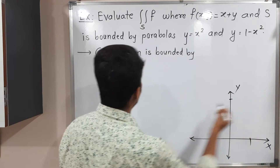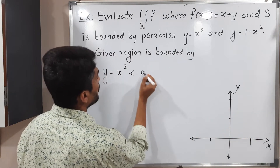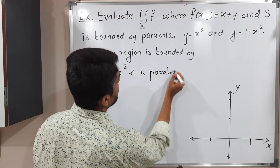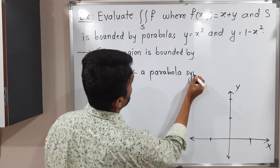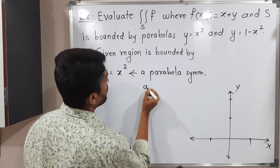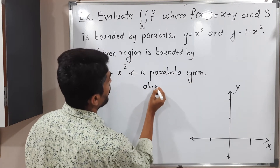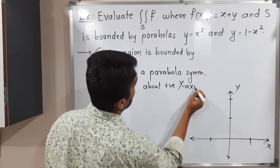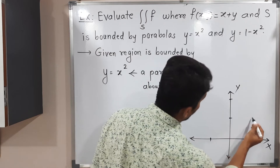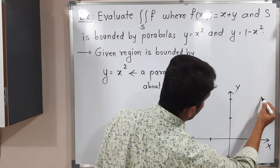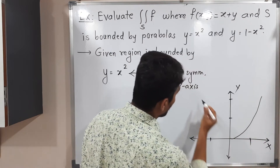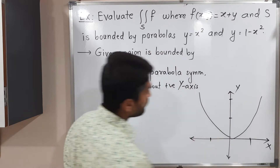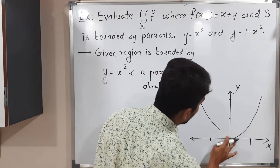The parabola is symmetric about the positive y-axis. Let me draw a rough sketch — the parabola will be like this.